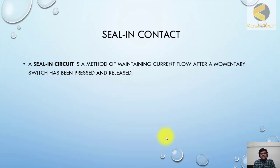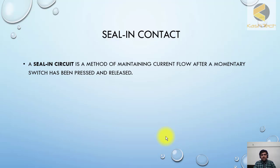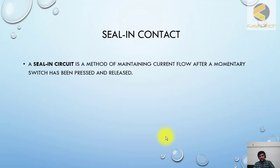A seal-in contact is a method of maintaining current flow after a momentary switch has been pressed and released. For example, with a normal switch in our house, if you press the button it turns on, press again it turns off. But with a seal-in contact, when I push a push button the auxiliary relay picks up, and when I release that push button the auxiliary resets — it is not holding its state.